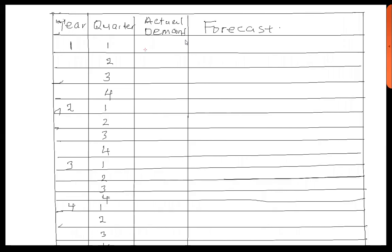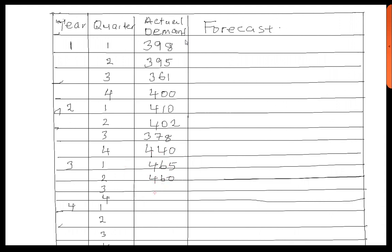For year 1, quarter 1 we have 398, quarter 2 we have 395, then 361, then 400. Then 410, 402, 378, 440, 465, 460, 430, and 473.